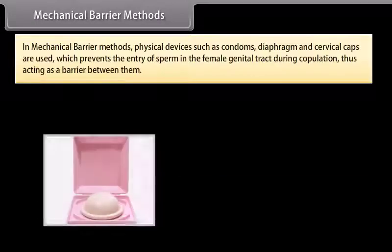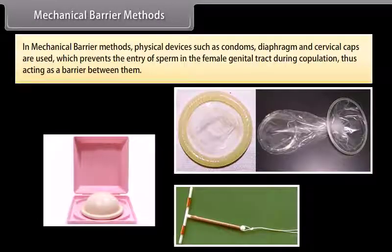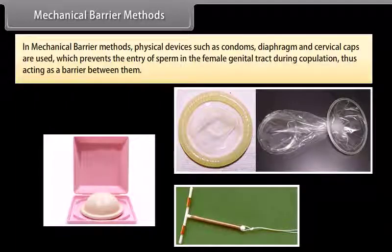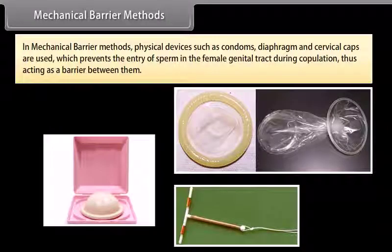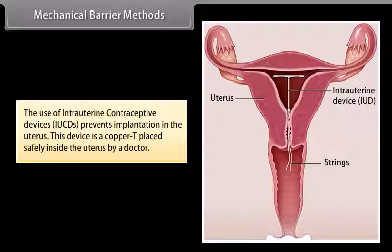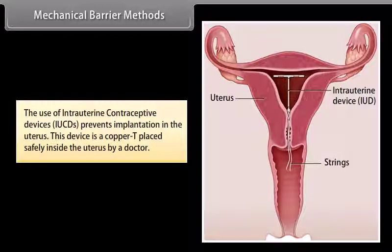Mechanical barrier methods: Physical devices such as condoms, diaphragm, and cervical caps are used, which prevent the entry of sperm into the female genital tract during copulation, thus acting as a barrier between them. The use of intrauterine contraceptive devices (IUCDs) prevents implantation in the uterus. This device is a copper T placed safely inside the uterus by a doctor.